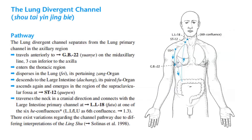The pathway of the lung divergent channel: it separates from the lung primary channel in the axillary region, travels anteriorly to Gallbladder 22 on the mid-axillary line, 3 cun inferior to the axilla. Then it enters the thoracic region, disperses in the lung — its pertaining organ — and descends to the large intestine, its paired hollow organ. It emerges in the region of the supraclavicular fossa at Stomach 12, traverses the neck in a cranial direction, and connects with the large intestine primary channel at LI18 at one of the six whole confluences — the LI-LU sixth confluence.